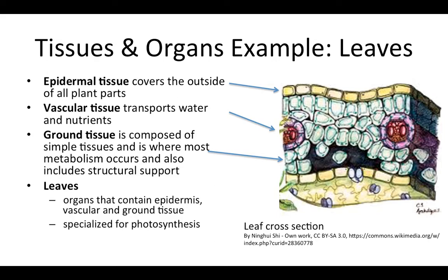Additionally, leaves have vascular tissue. This is tissue specialized for transport, and we will see it contains xylem and phloem, and that is pictured in these bundles here and here. Third, leaves contain ground tissue. Ground tissue is composed of simple tissues, which were the parenchyma, collenchyma, and sclerenchyma that we just mentioned.